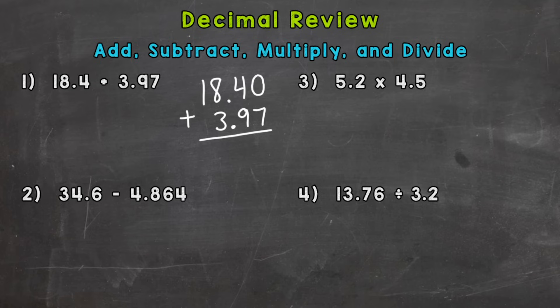So 0 plus 7 is 7. 4 plus 9 is 13. Bring my 1 over here. Now decimals line up throughout the whole problem, so bring it straight down. 1 plus 8 is 9. 1 plus 3 is 12. 1 plus 1 is 2.